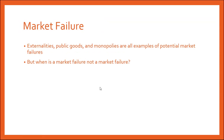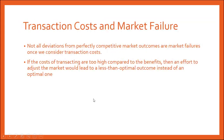So we talked about externalities, public goods, and monopolies as all examples of potential market failures, but actually identifying a market failure is very difficult. Just because something checks one of these boxes — as an externality, a public good, or a monopoly — does not necessarily imply that it is a market failure, especially not once we consider transaction costs.